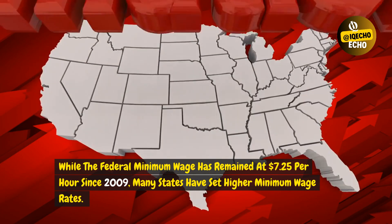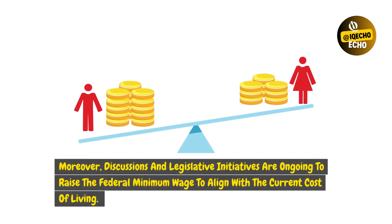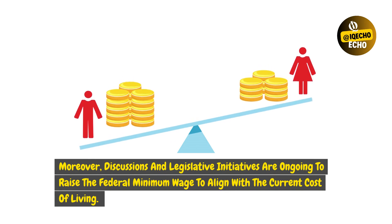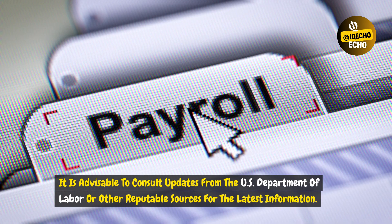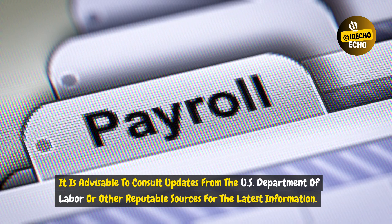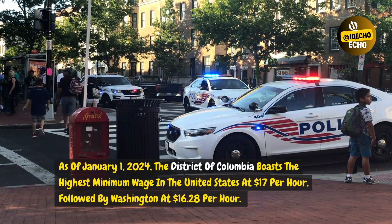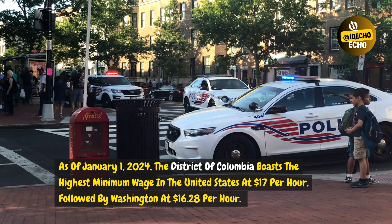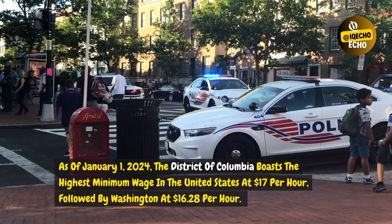While the federal minimum wage has remained at $7.25 per hour since 2009, many states have set higher minimum wage rates. Discussions and legislative initiatives are ongoing to raise the federal minimum wage to align with the current cost of living. As of January 1, 2024, the District of Columbia boasts the highest minimum wage in the United States at $17 per hour, followed by Washington at $16.28 per hour.